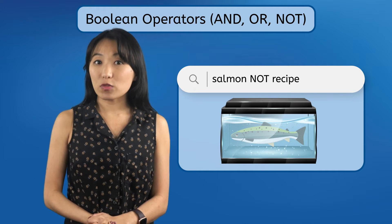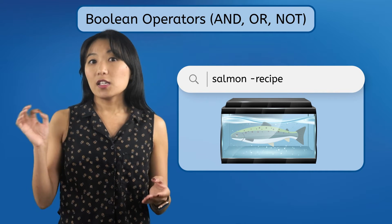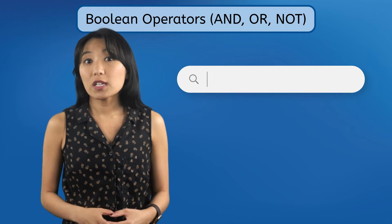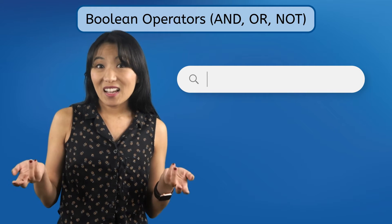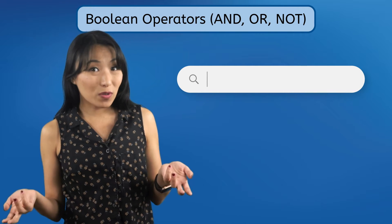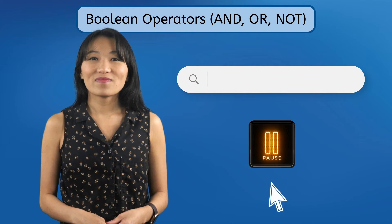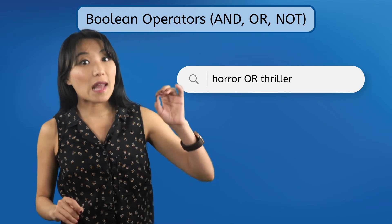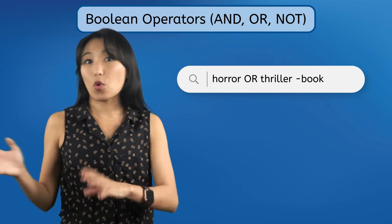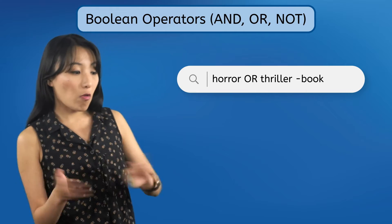One important note: some information retrieval systems use the minus sign instead of NOT, as in, subtract this word from the results. You can even combine Boolean operators. If I love horror and thrillers, but I don't feel like I have the attention span to read a book right now, what could I search for to find some recommendations? One thing I could try is horror OR thriller NOT book, so my results would be a mix of horror and thriller movies, TV shows, and podcasts, but any books in the mix would be thrown out.